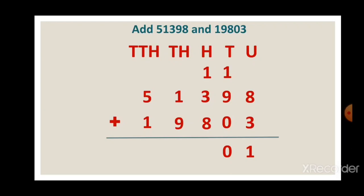So we write 2 in the hundreds place and carry 1 over to the thousands place. In the thousands place: 1000 plus 1000 makes 2000, and 2000 plus 9000 is 11,000, which means 10,000 plus 1000. So we write 1 in the thousands place and carry 1 over to the ten-thousands place.